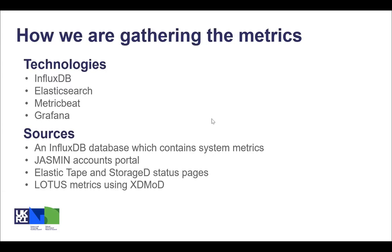We're using a few different technologies to enable this. InfluxDB is a time series database. Elasticsearch is a distributed open source search and analytics engine for all types of data, which can be optimized for time series and searches and is also flexible so the records don't have to have the same structure. In effect we're also using this like a time series database for metrics.